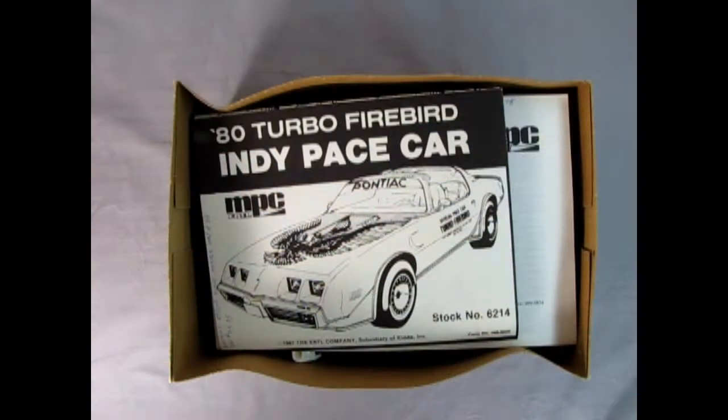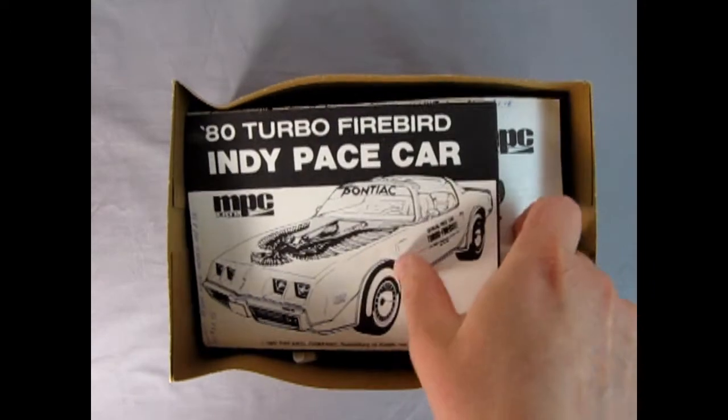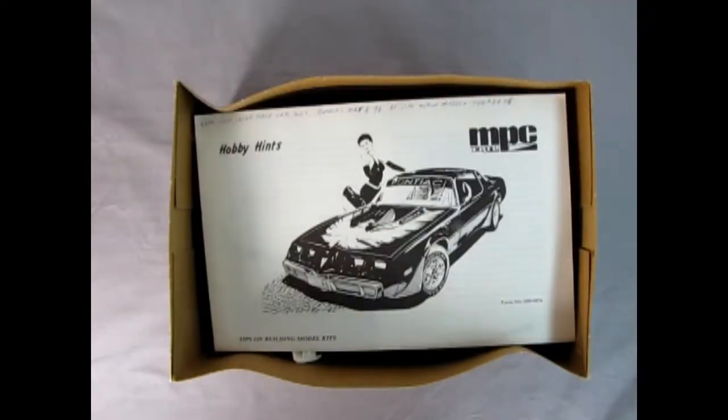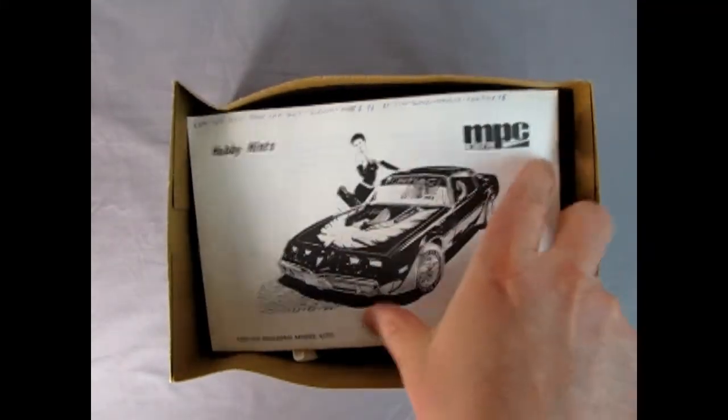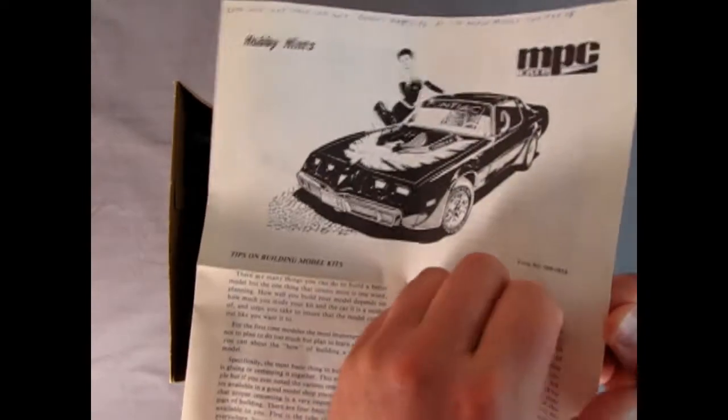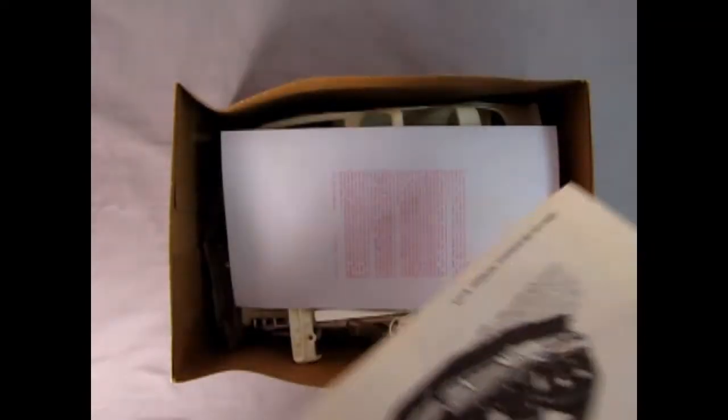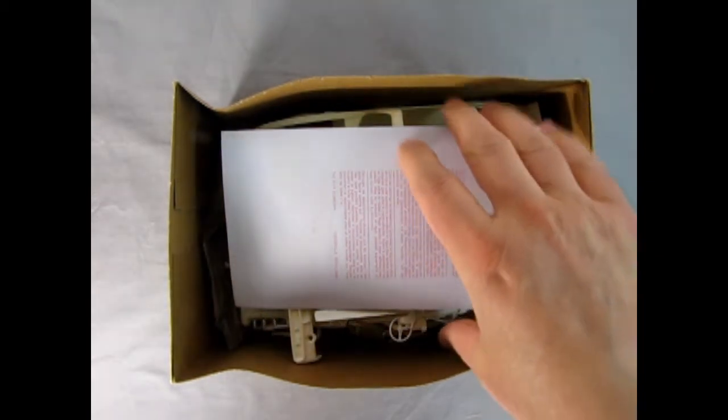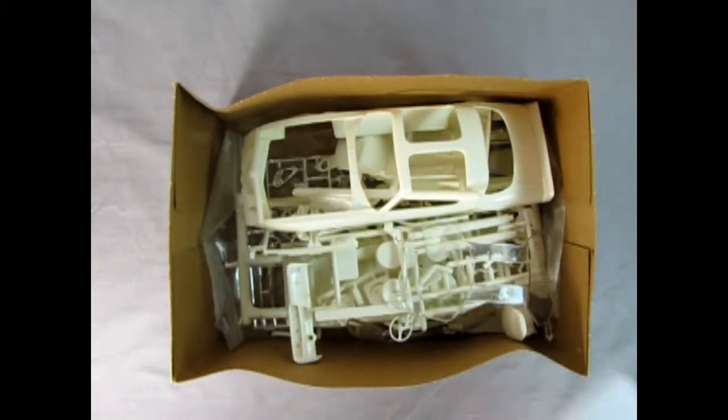And that box included this Firebird, the 69 Camaro, and the 86 Corvette. However, these are the instructions we got with the model, and then I also got this thing, this is hobby hints that was pretty cool. Folds out to a big sheet, tells you everything that you want to know about building models including like using airbrushes and the whole deal. Really nice bonus material from Ertl MPC.